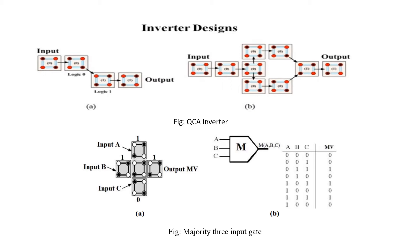Some additional applications can also be implemented here. The majority 3-input gate circuit: when the majority of inputs are high, the output will be high; otherwise the output will be 0.